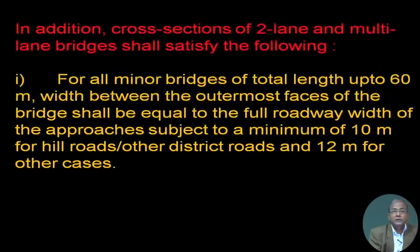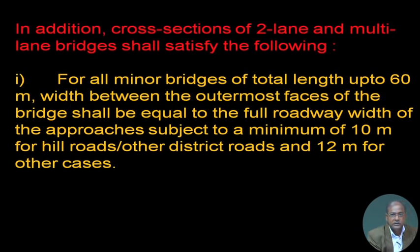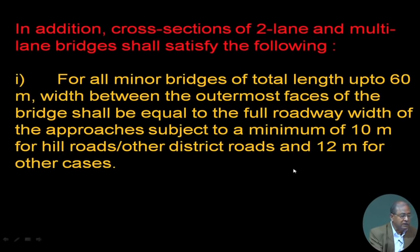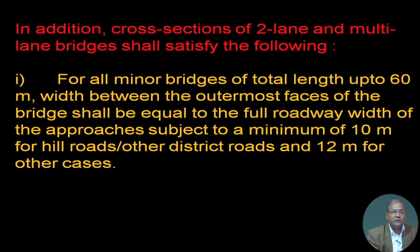For minor bridges with total length up to 60 meters, the width between the outermost faces shall be equal to the full roadway width of the approaches, subject to a minimum of 10 meters for hill roads and 12 meters for other cases. Our objective when deciding width is that the road width should not be more than the bridge width, otherwise there will be traffic congestion.